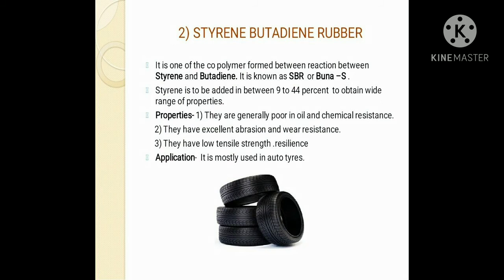The second synthetic rubber is styrene butadiene rubber. As the name indicates, this is a copolymer formed by reactions between two different polymeric elements: styrene and butadiene. Another name for this type of rubber is SBR or BUNA-S. The S stands for styrene. In this rubber, styrene is added in between 9 to 44% to obtain a wide range of properties.